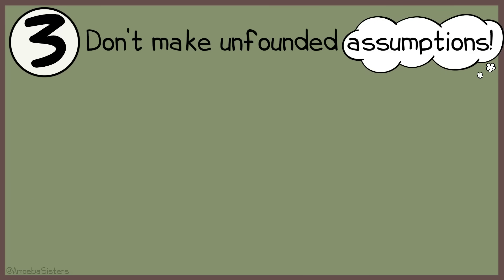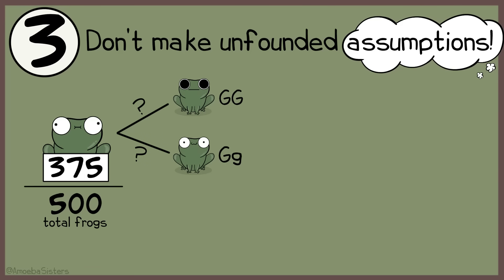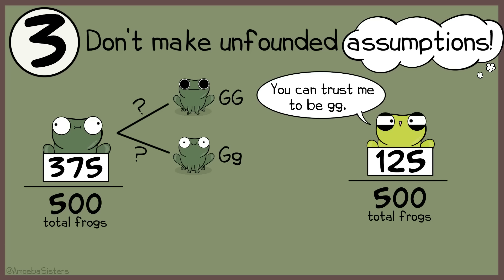Remember when I was given a value of 375 frogs out of 500 being dark green? I didn't necessarily know whether they were big G big G or big G little g. Instead, I chose to work with the recessive genotype since I knew light green frogs would be little g little g.